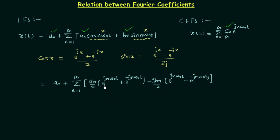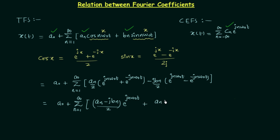Substituting, with e^(jn·ω₀·t) and e^(-jn·ω₀·t) as common factors, we get: a0 plus summation n = 1 to infinity of [(a_n - j·b_n)/2]·e^(jn·ω₀·t) plus [(a_n + j·b_n)/2]·e^(-jn·ω₀·t). Now let c_n = (a_n - j·b_n)/2, and therefore (a_n + j·b_n)/2 becomes c_{-n}.